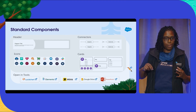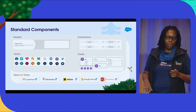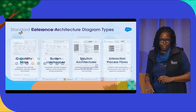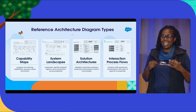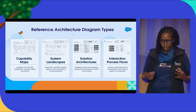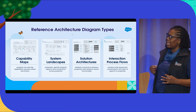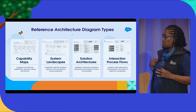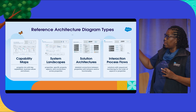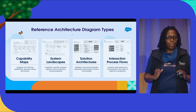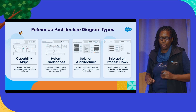What's nice about the diagrams is that you can use them in Lucidchart, Google Slides, or the variety of tools available. We went back and named the diagrams what they are, so you'll find capability maps, system landscapes, solution architectures, and interaction process flows — think about your process flows of those sequence steps with numbers included. So I'd love for you to be able to see it up front, and I'm going to ask Shobi to go ahead and give us a guided tour of Salesforce Diagrams.